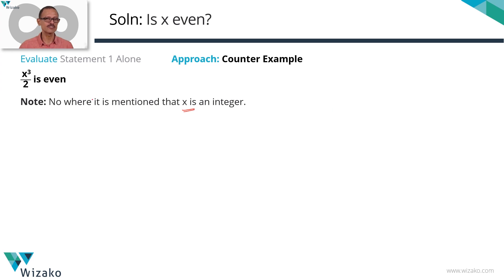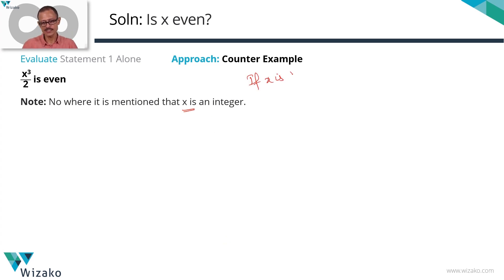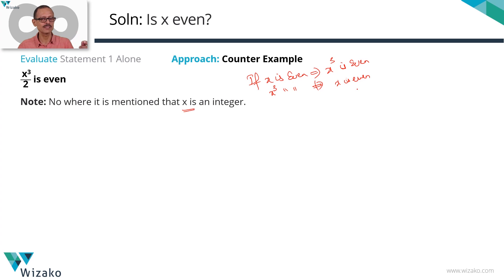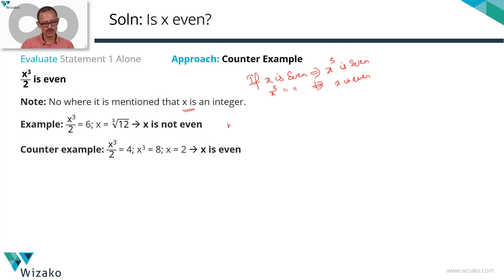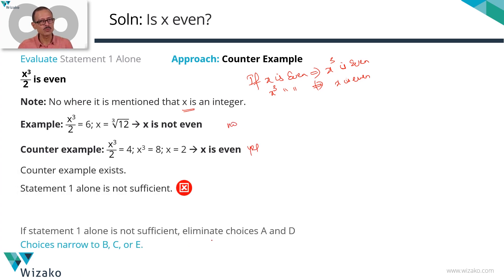Nowhere is it mentioned that X is an integer — that's the crux and the trap in this statement. The moment we see X cubed divided by 2 is even, we might say X cubed is even and therefore X should be even. But that is not true. If X is even, then X cubed is even — but if X cubed is even, that does not imply X is even. This was borne out by the example where X cubed equals 12 and X equals the cube root of 12, which is not even an integer. So: counter-example with X cubed divided by 2 equals 6 gives X as cube root of 12 — not even. Example with X cubed divided by 2 equals 4 gives X equals 2 — even. Counter-example exists; statement one is not sufficient. Eliminate A and D; we're down to B, C, or E.